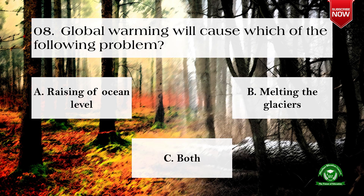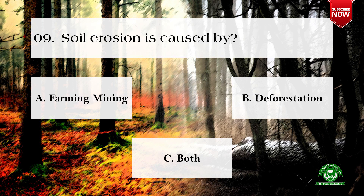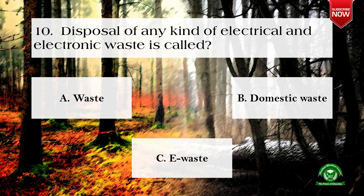The right option for global warming effects is c) both. Next question: soil erosion is caused by — options are: farming, mining, deforestation, and both. The correct option is d) both. Next question: disposal of any kind of electrical and electronic waste is called — options are: a) west, b) domestic waste, c) e-waste. The correct option is c) e-waste.